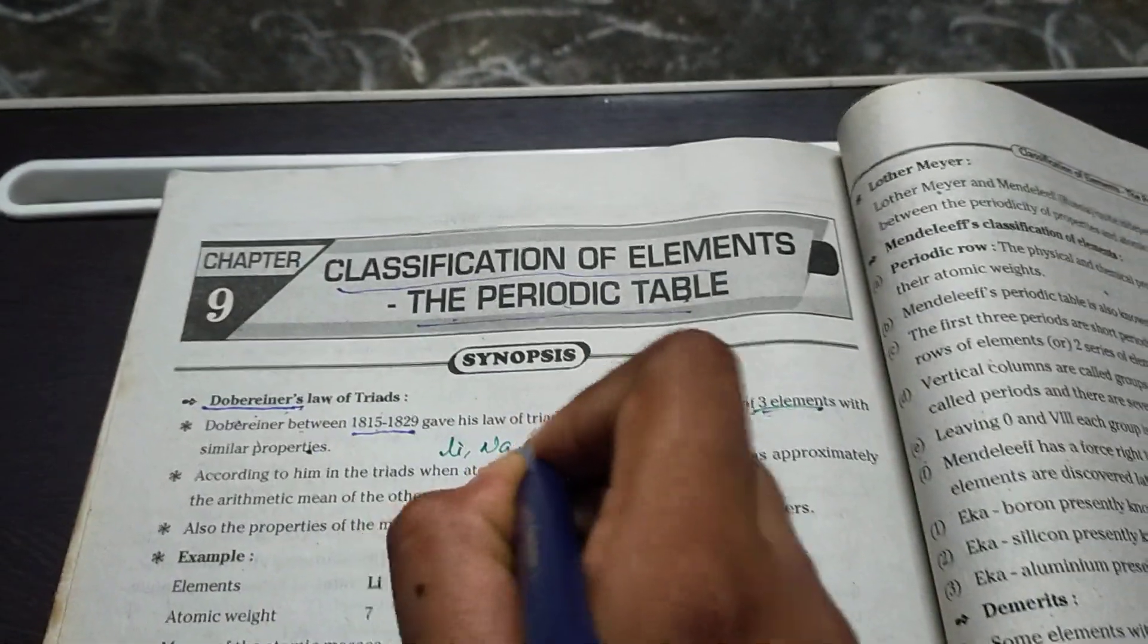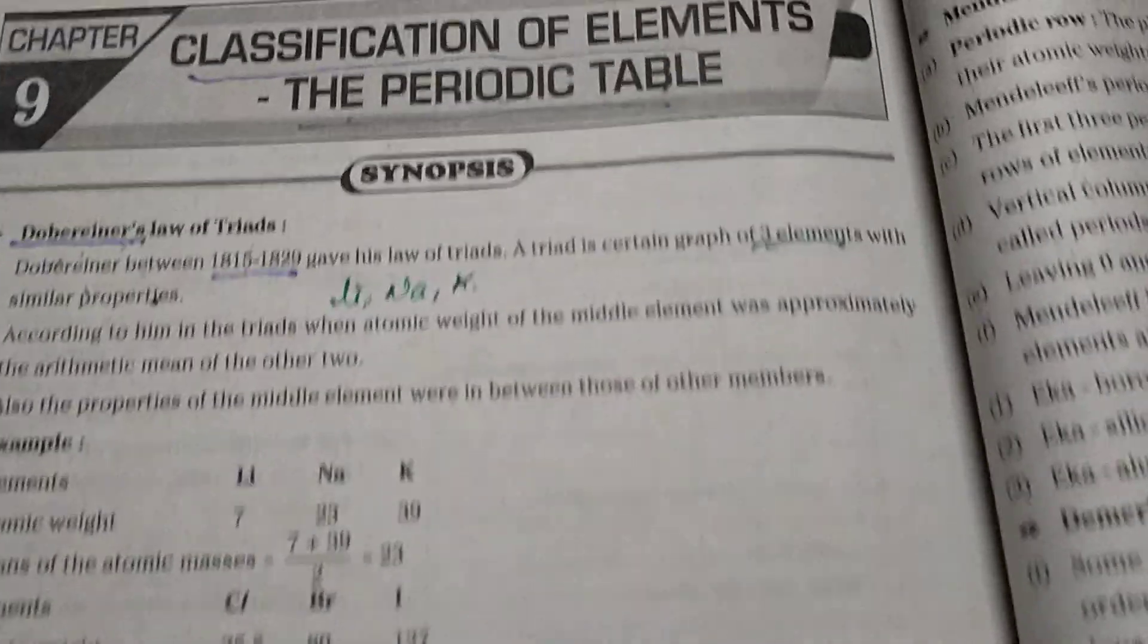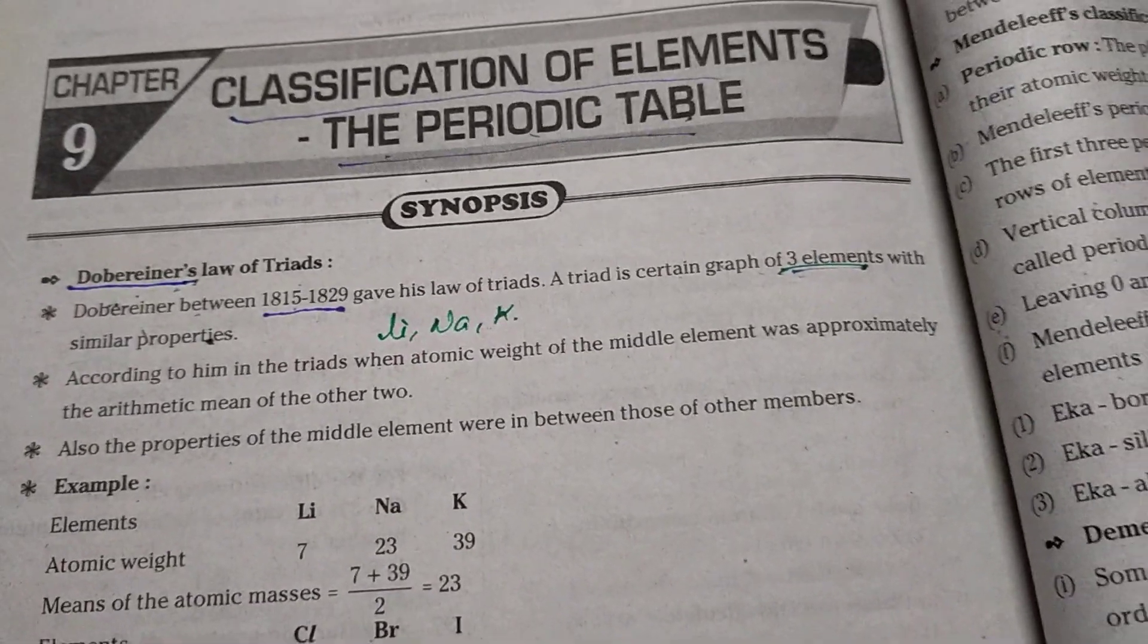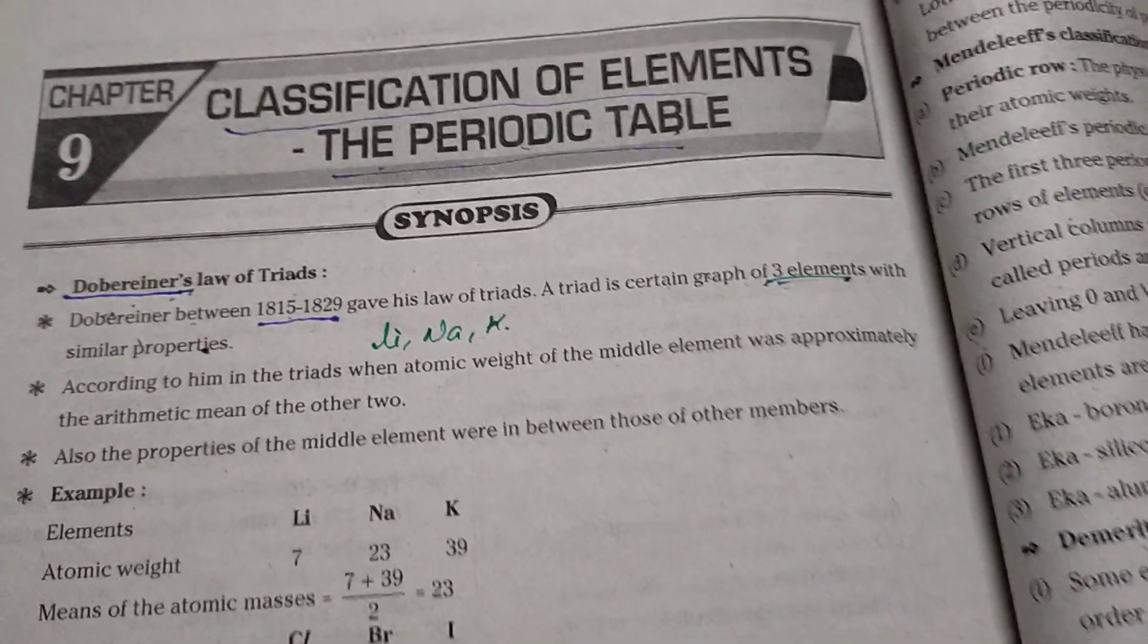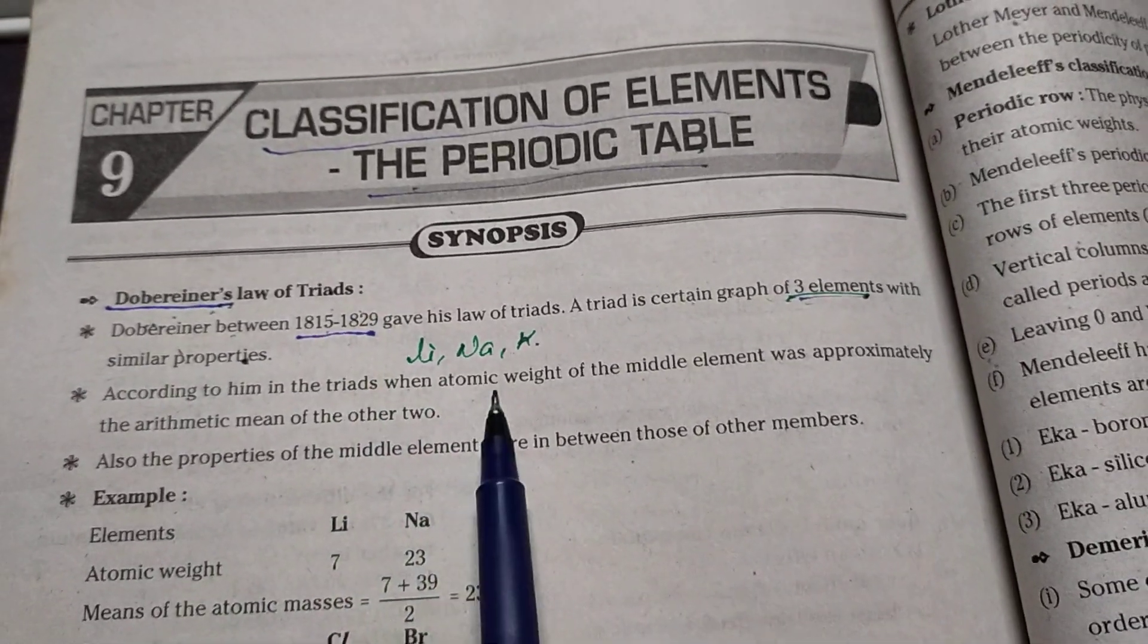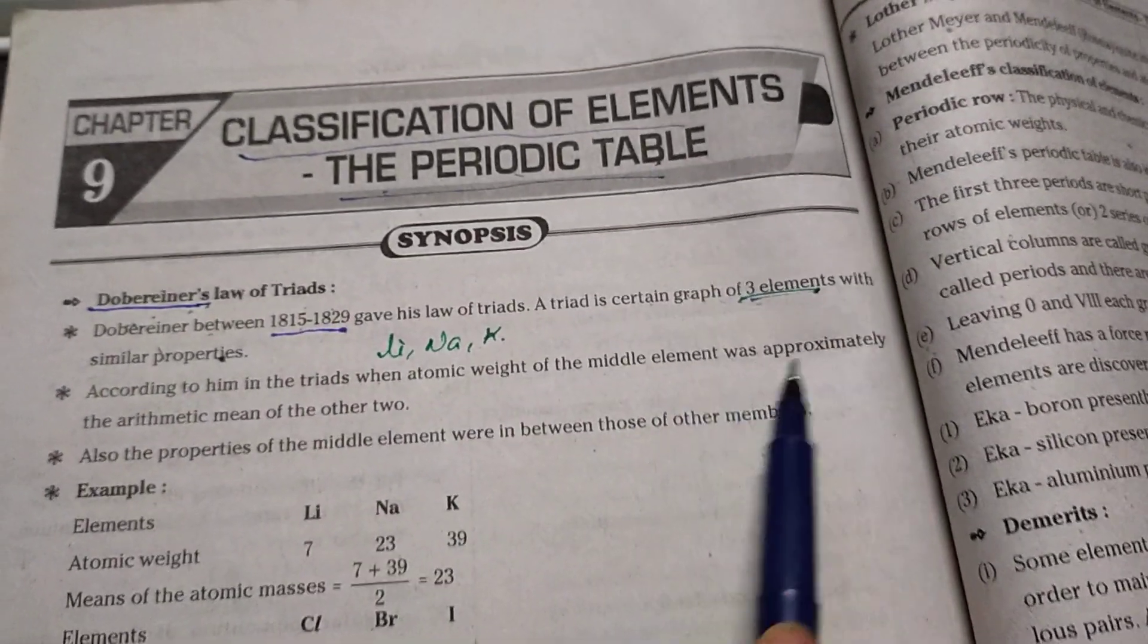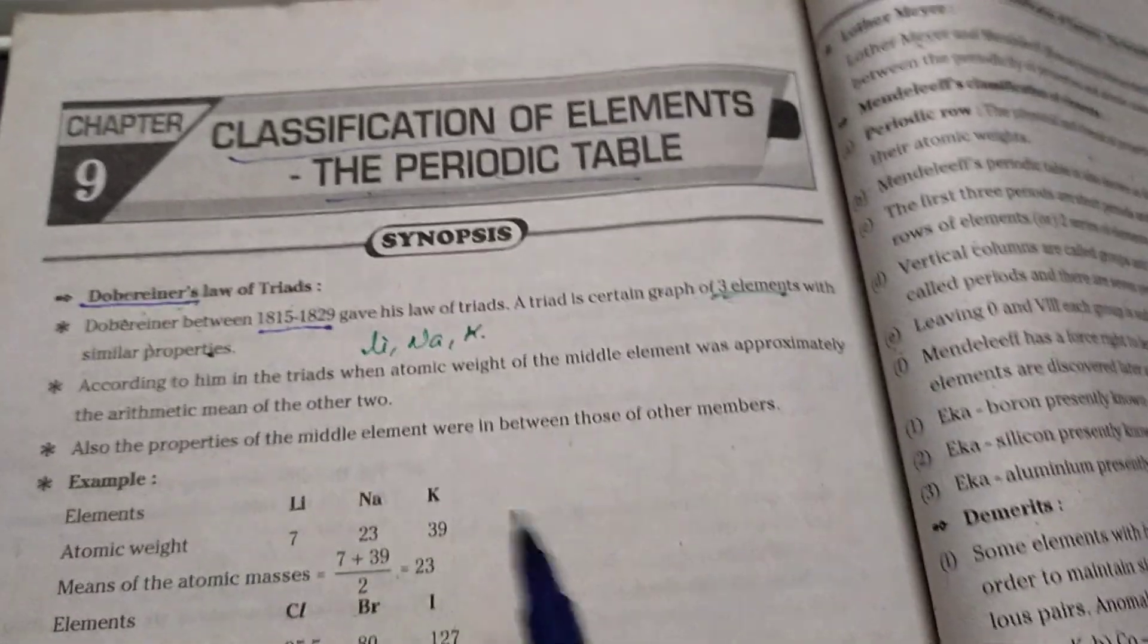Lithium, sodium, potassium. This is one example of Dobereiner's law of triads. According to him, in triads, when the atomic weight of the middle element was approximately the arithmetic mean of the other two.